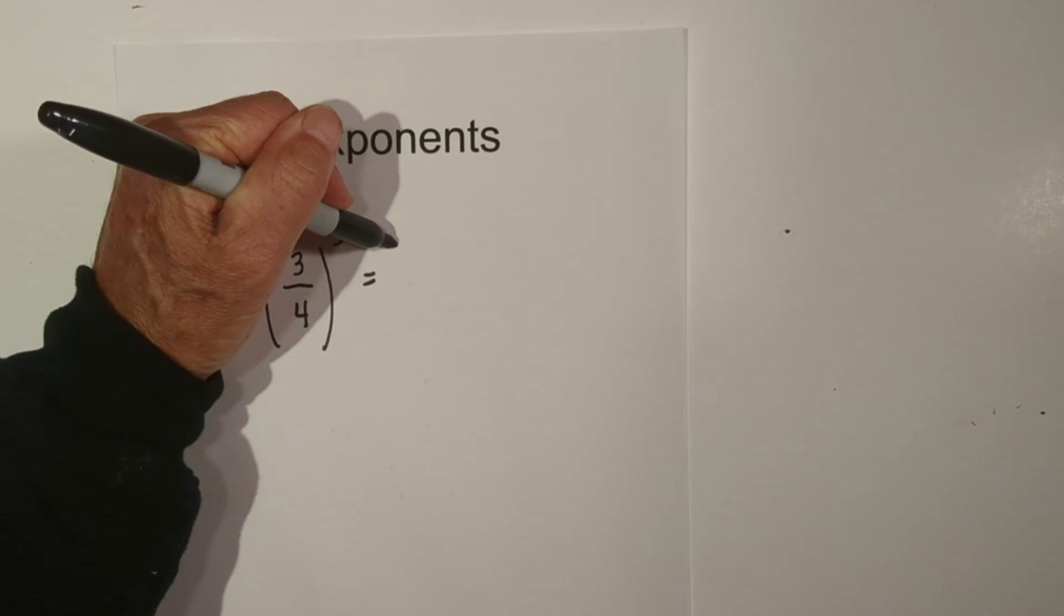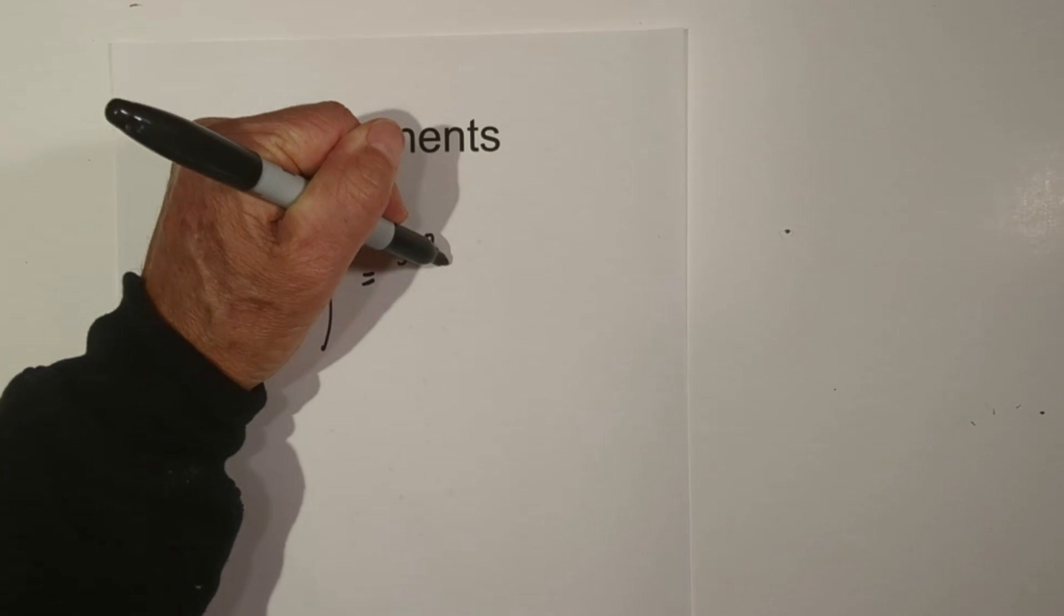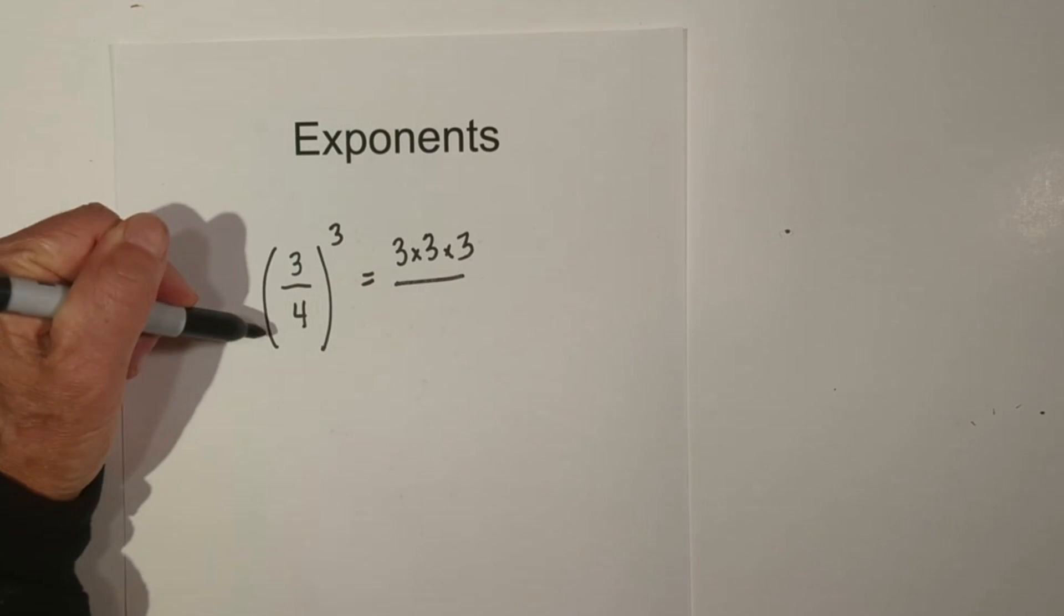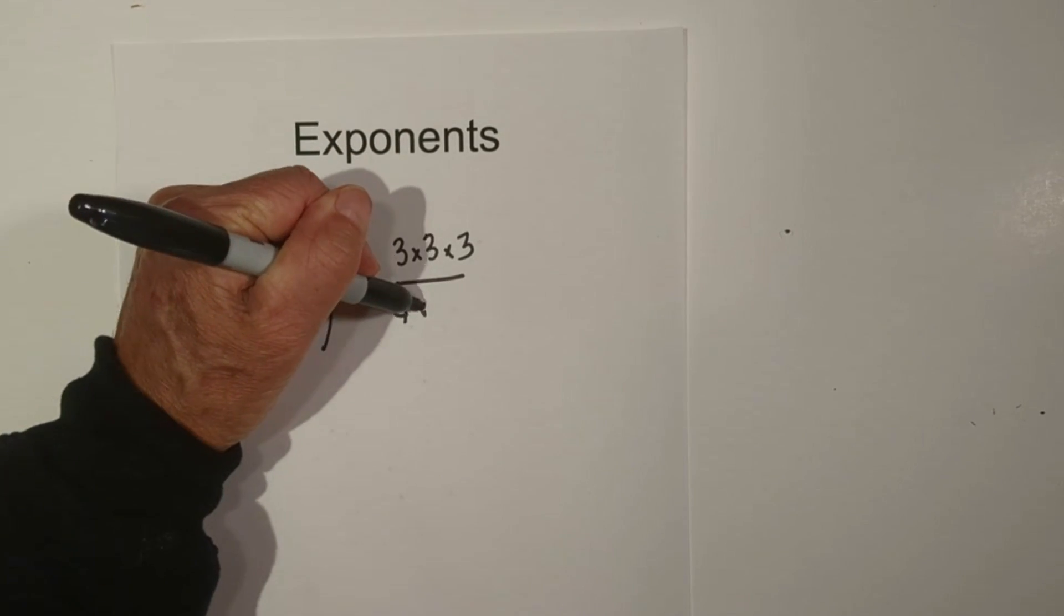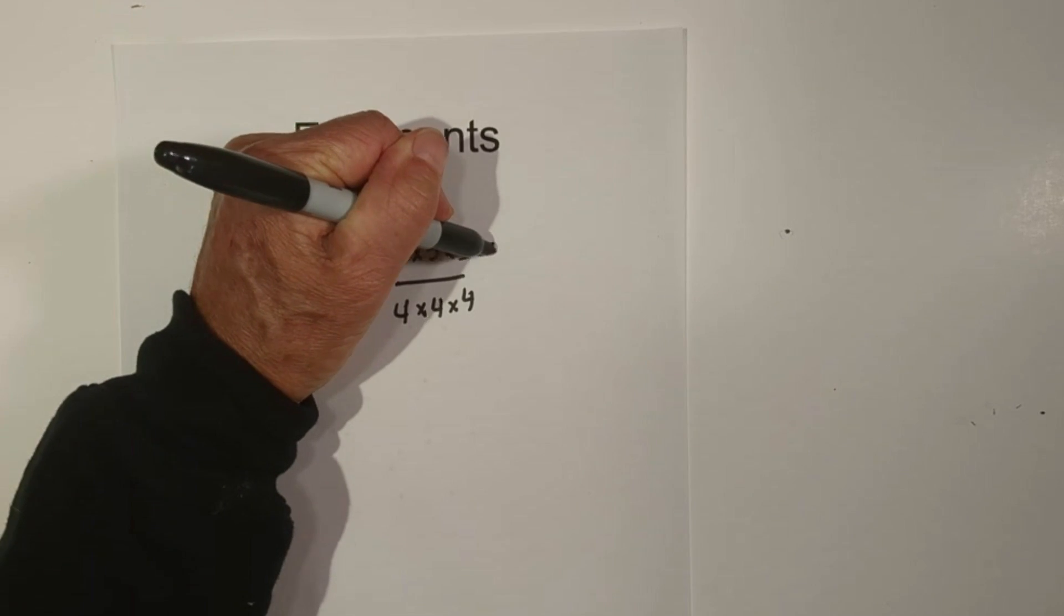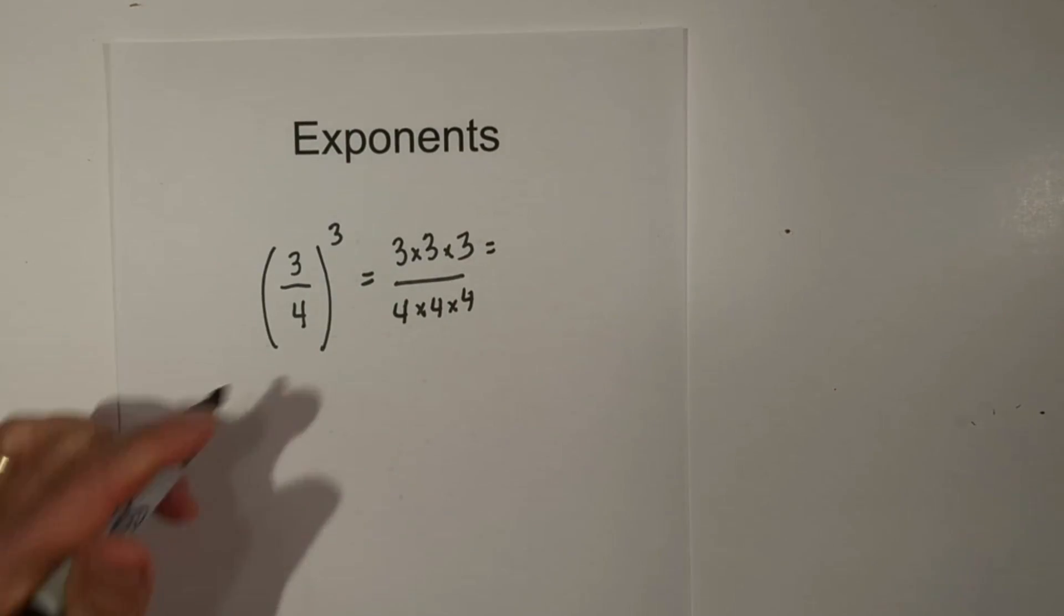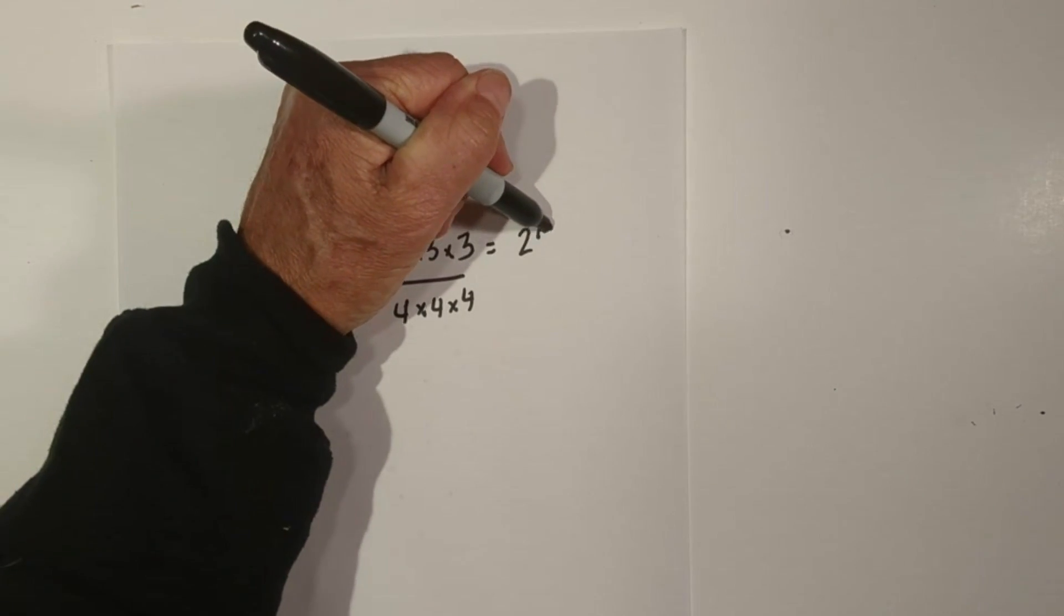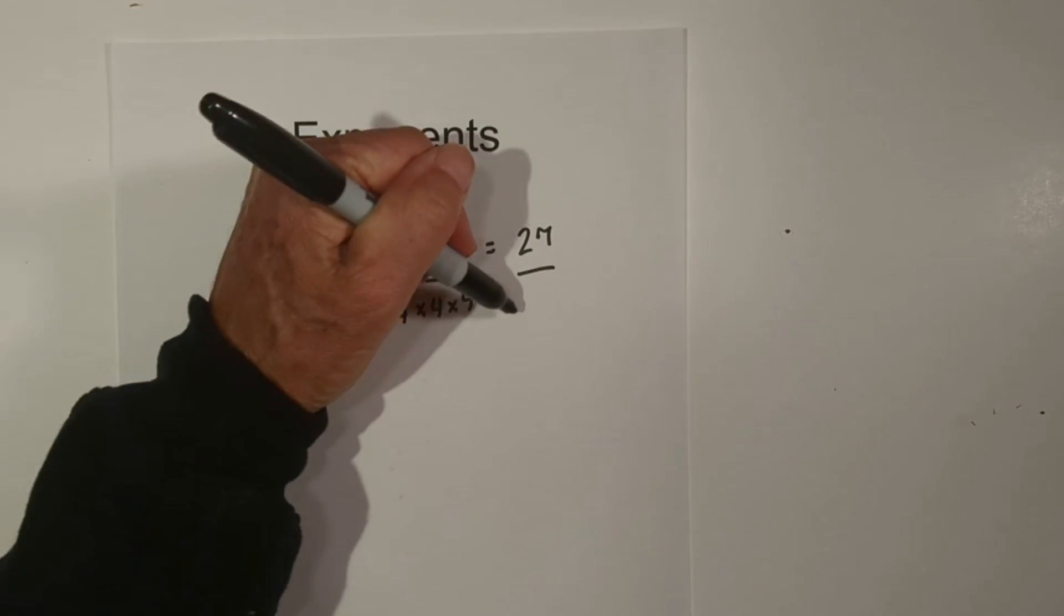So this basically just becomes 3 times 3 times 3 over 4 times 4 times 4. And if you do the math, 3 times 3 times 3 is 27, and 4 times 4 times 4 is 64.